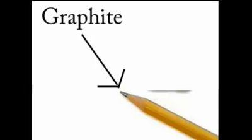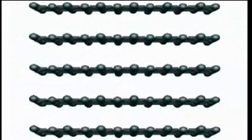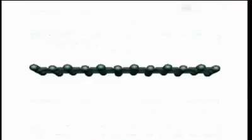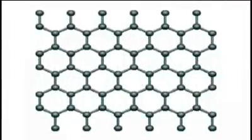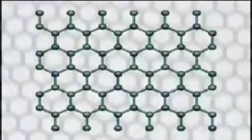If you look at the black mineral in the core of a pencil, it's graphite. Graphite is made up of layers of carbon atoms. If you take one of these layers, we can roll it up to obtain the structure of a carbon nanotube.